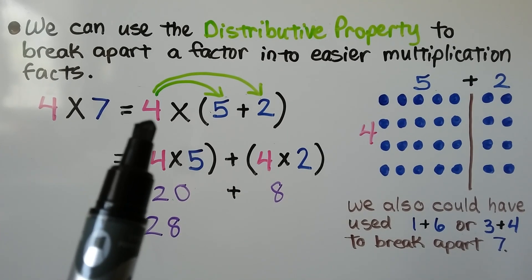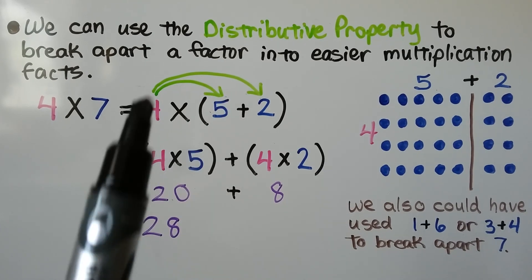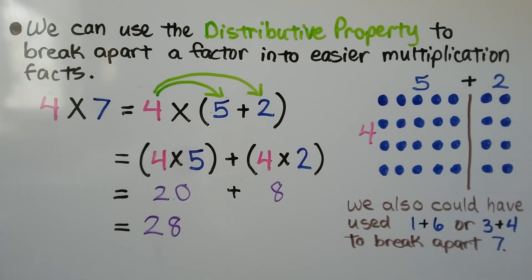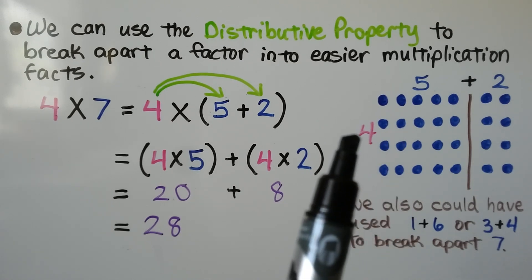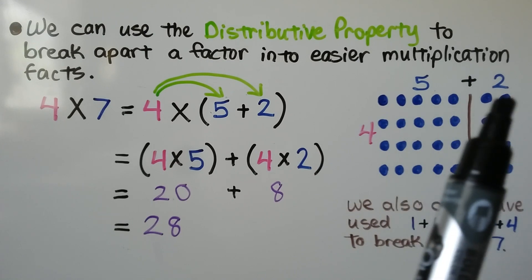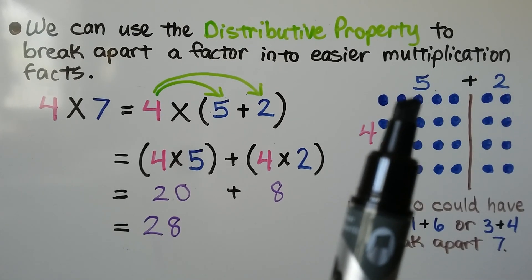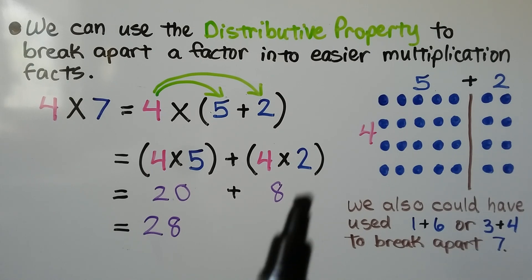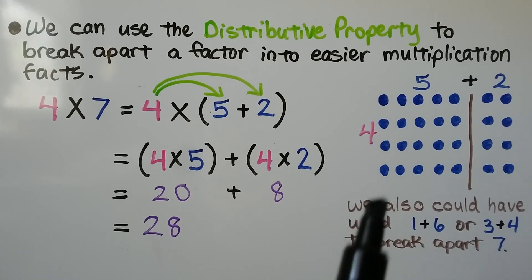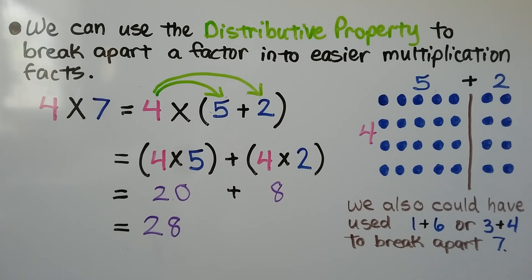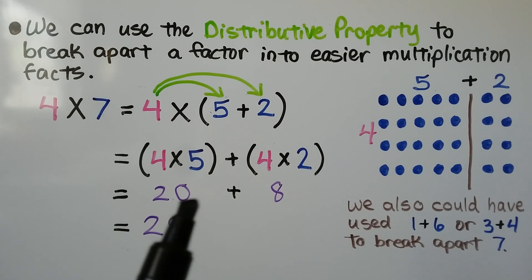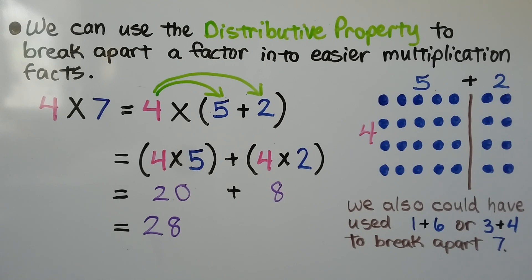Then we distribute the 4 to the 5 plus 4 to the 2. We take an array that is 4 rows and 7 in each row, and we break it into 5 in each row and 2 in each row. So we have 4 times 5 plus 4 times 2. 4 times 5 is equal to 20, and 4 times 2 is equal to 8. We add 20 plus 8, and 4 times 7 is equal to 28. We also could have used 1 plus 6 or 3 plus 4 to break apart 7.